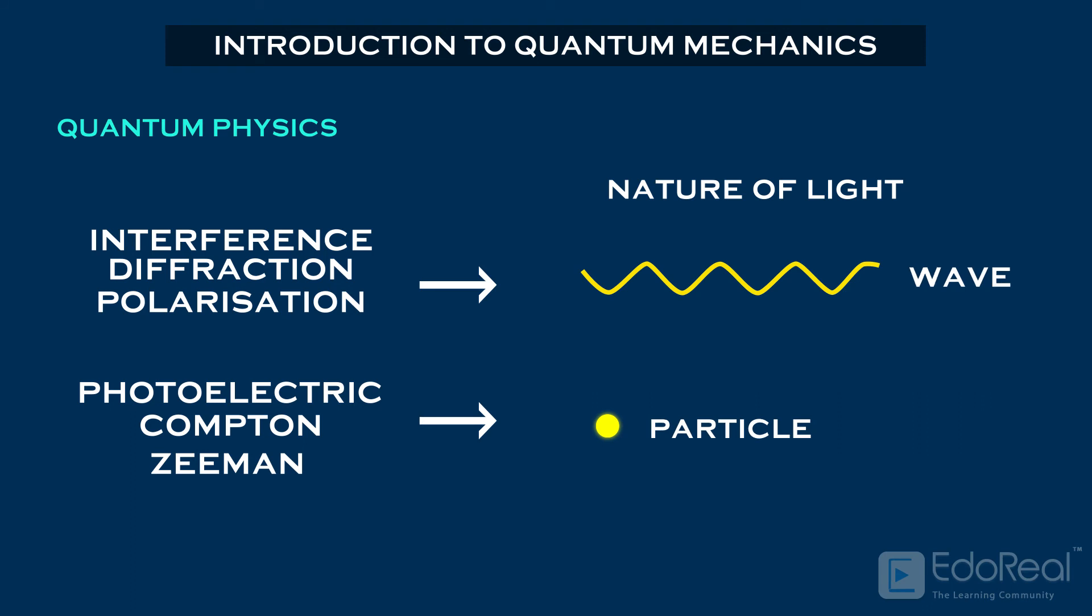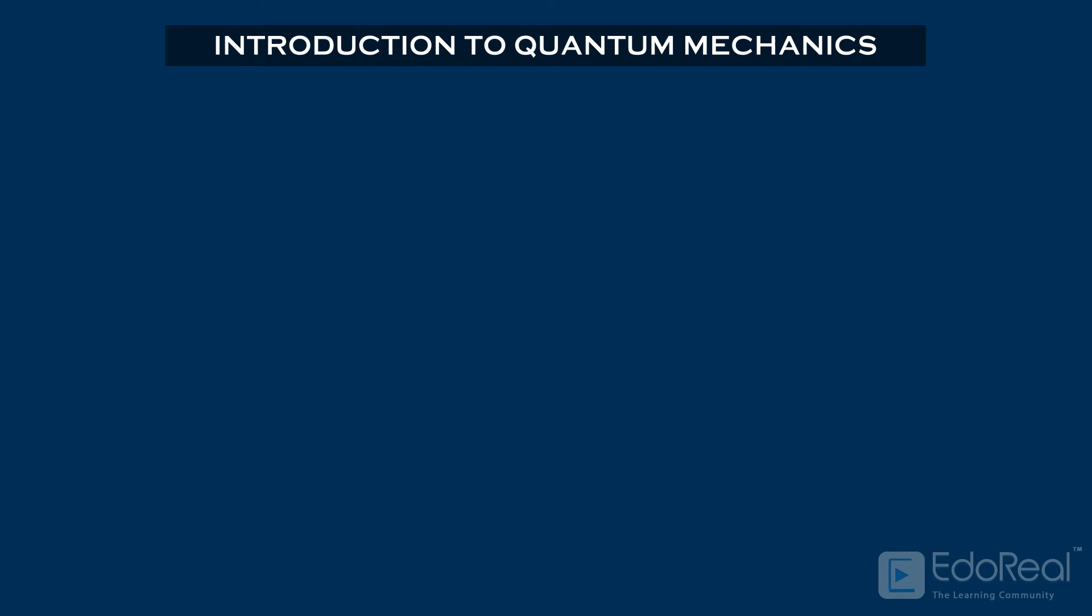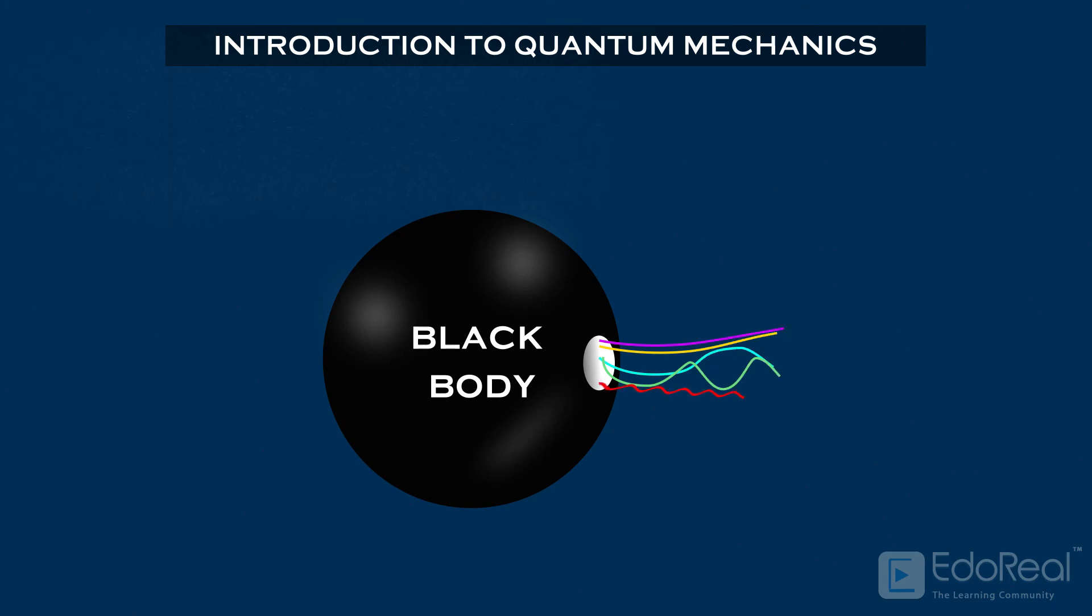So light exhibits wave and particle nature. This dual behavior is called the dual nature of light. The failure of classical mechanics was observed first when it was applied to the theory of black body radiation.